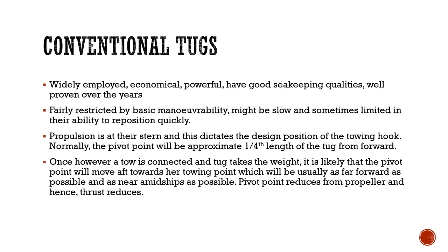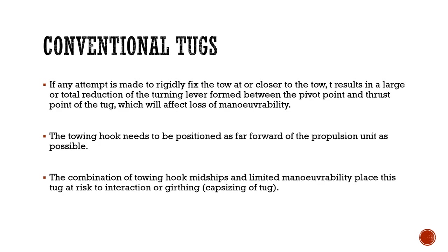The propulsion of these tugs is usually at their stern, and this dictates the design position of the towing hook. Normally the pivot point will be approximately one-fourth the length of the tug from the forward part. However, once a tow is connected and the tug takes the weight, the pivot point is likely to move aft towards the towing point.